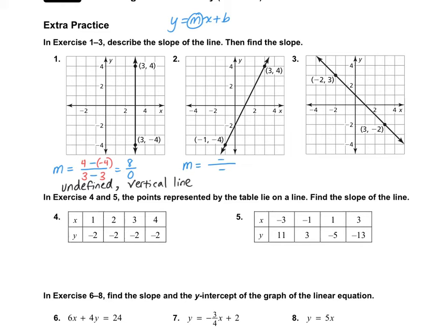For number 2, my y numbers are 4 and negative 4, and my x numbers are 3 and negative 1. Simplifying: 4 minus negative 4 is 4 plus 4, which is 8 on top, and 3 minus negative 1 is 3 plus 1, which is 4 on the denominator. That simplifies to 2, so my slope is 2 and it's a positive slope.